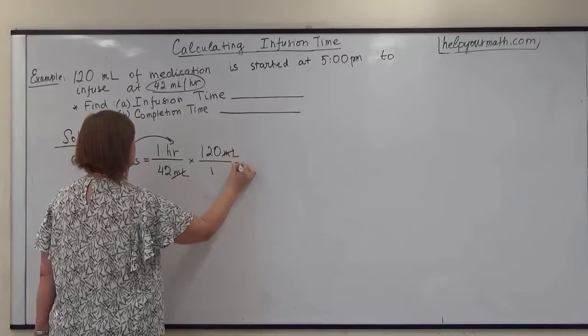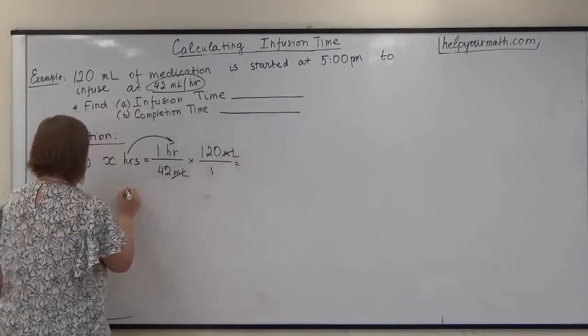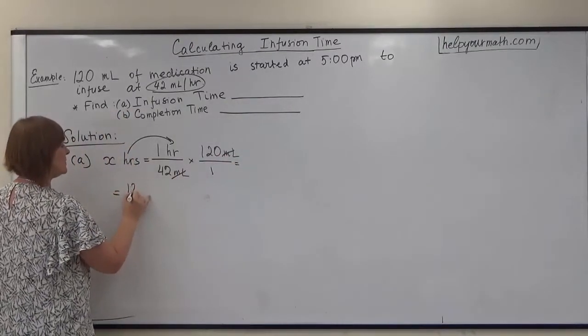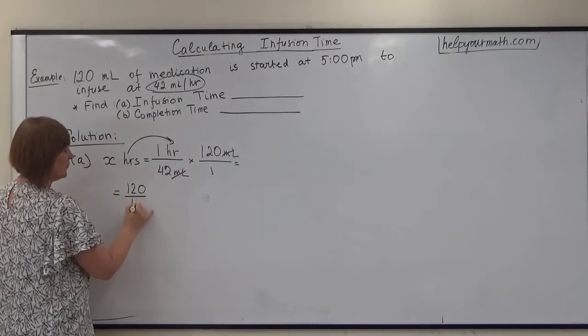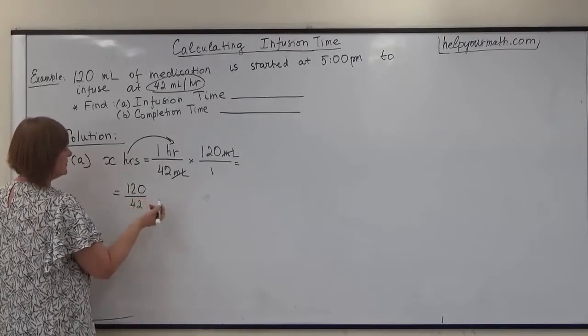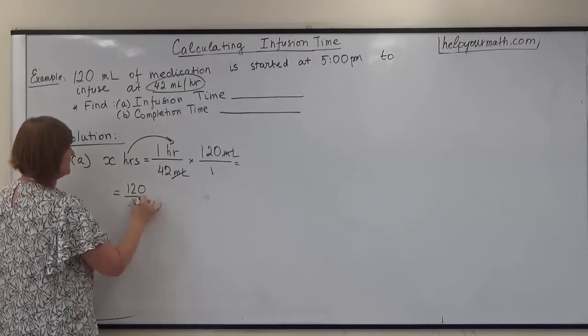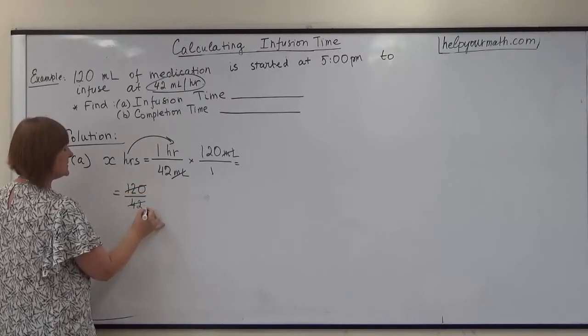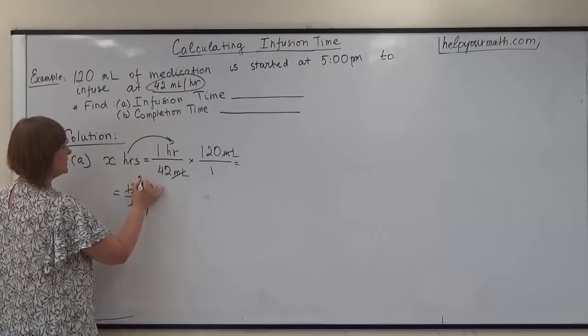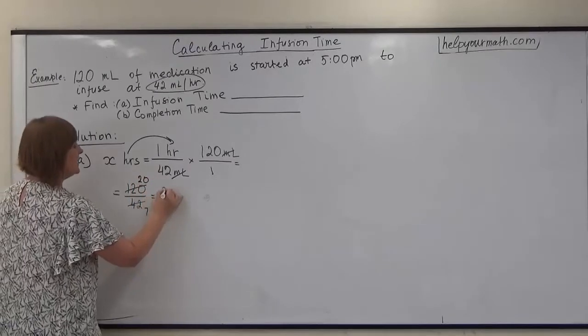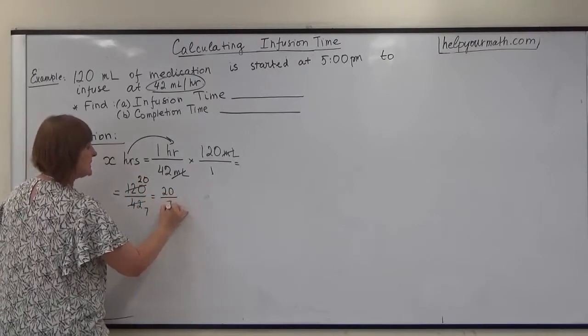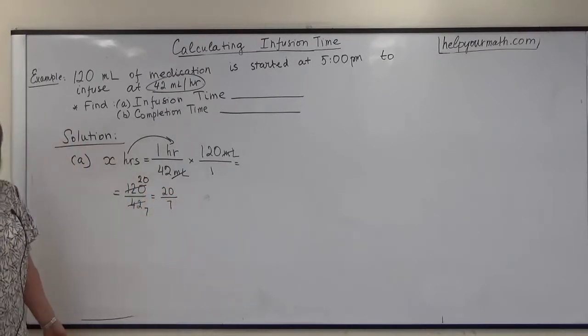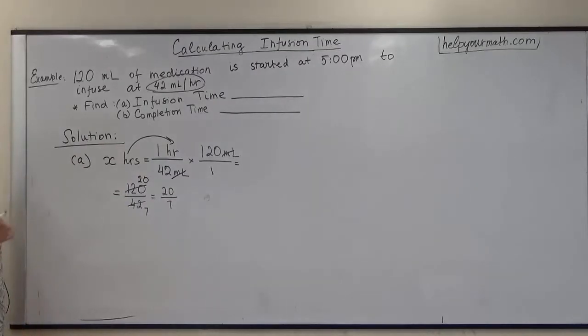We can cancel milliliters and look what we have right now. 120 over 42. We can reduce that by dividing both sides by 6. 42 divided by 6 is 7, 120 divided by 6 is 20. So 20 over 7 cannot divide nicely. We need to perform long division.